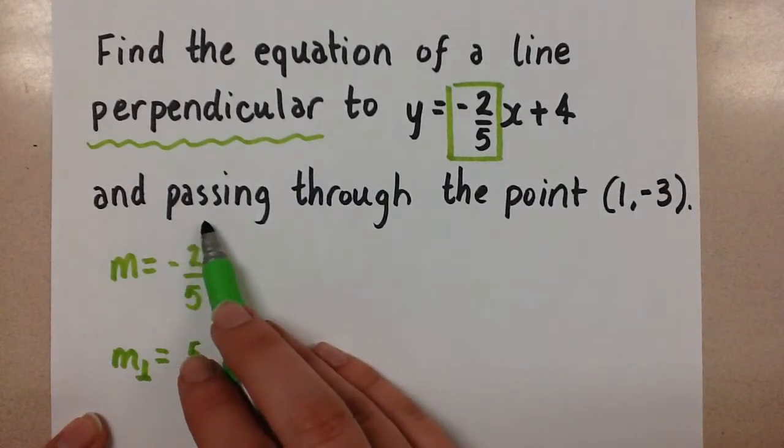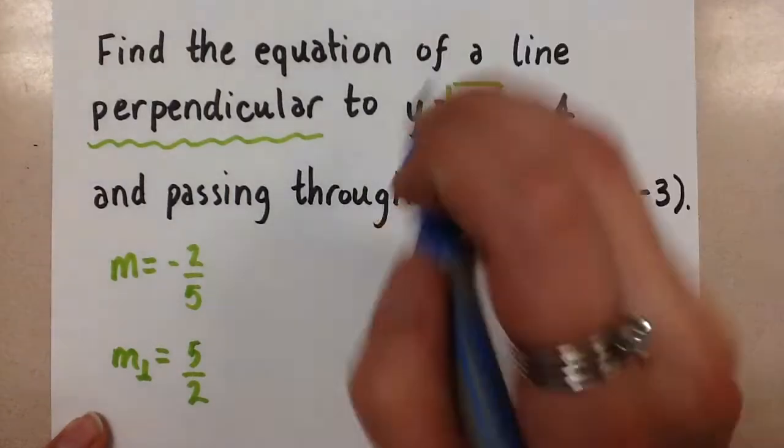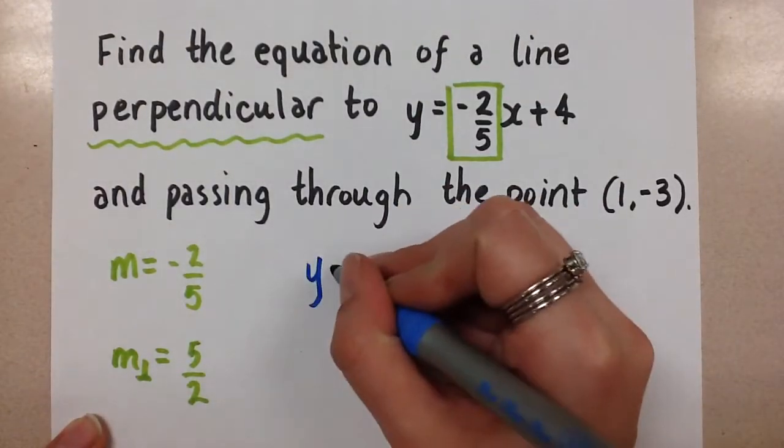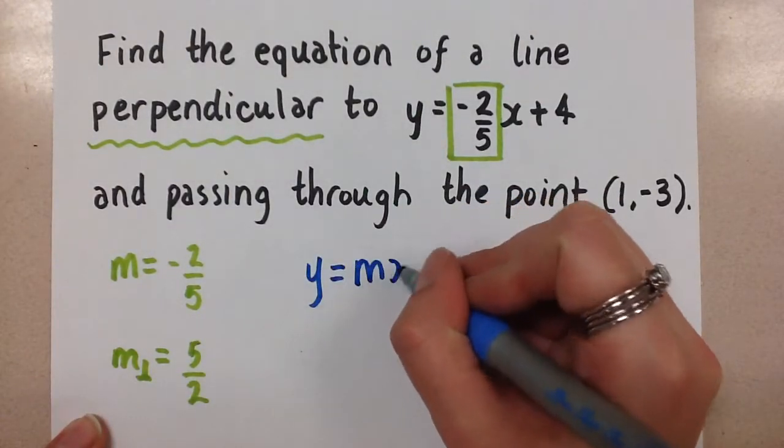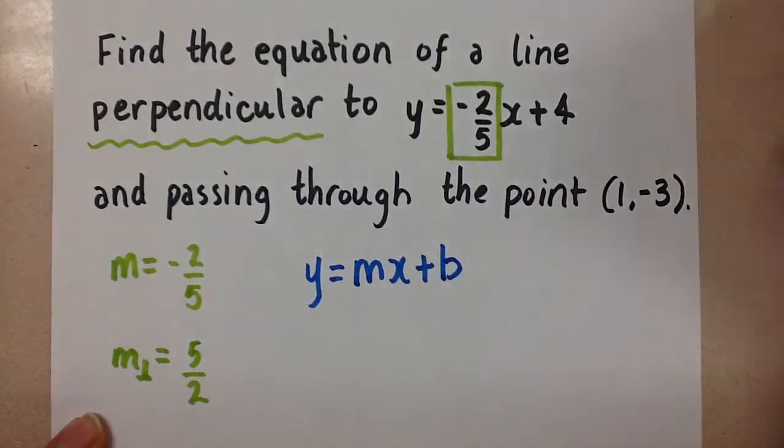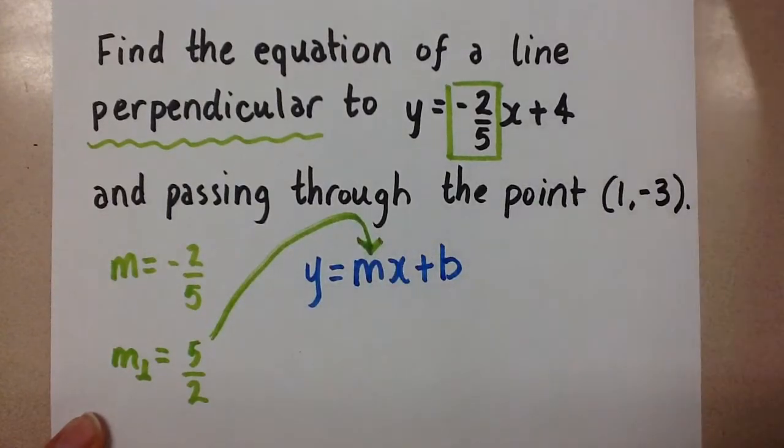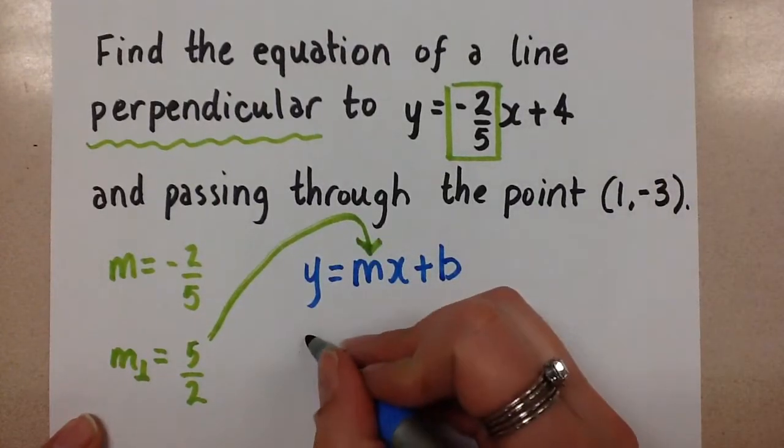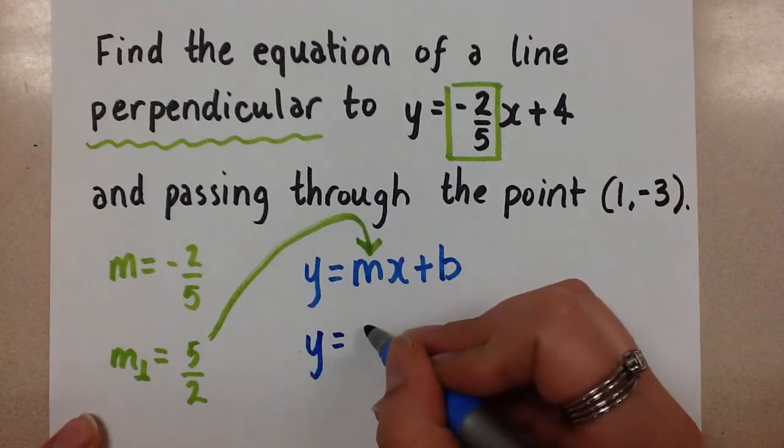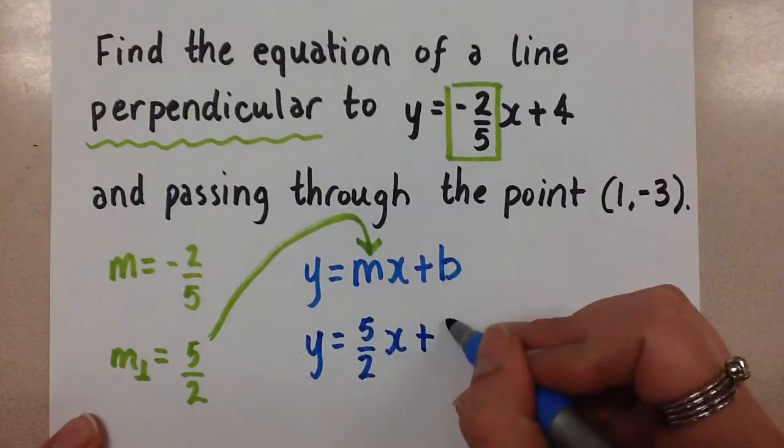Now we also want it to pass through this point. So let's start with the equation of the line in slope y-intercept form. That's y equals mx plus b. But we know the m. We just said it was positive 5 over 2. So we're going to plug it in for the m in our equation, and we'll get y equals 5 over 2x plus b.